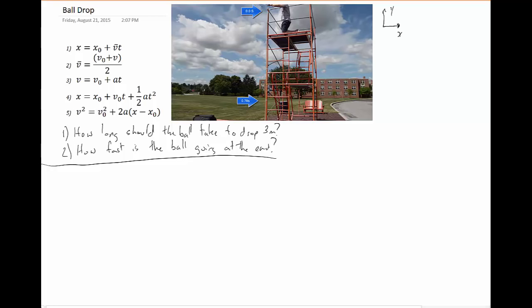We're not going to really worry about the X direction since the ball drops purely in the Y direction. I'm going to set our origin so that right at the bottom here is where I'm going to call Y equals zero. Up at the top here, Y equals 3 meters because we dropped at 3 meters.